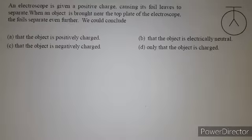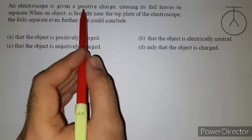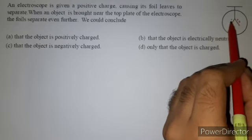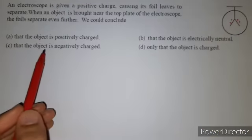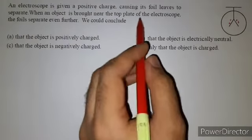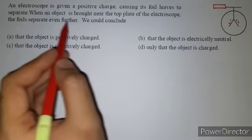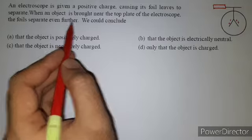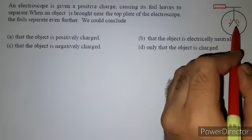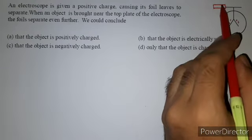According to the problem, this electroscope was initially given some positive charge, and due to this positive charge, both the foils will start repelling each other. Now a new object is brought near the top plate of the electroscope, and these foils separate even further — the separation between the two foils has further increased.